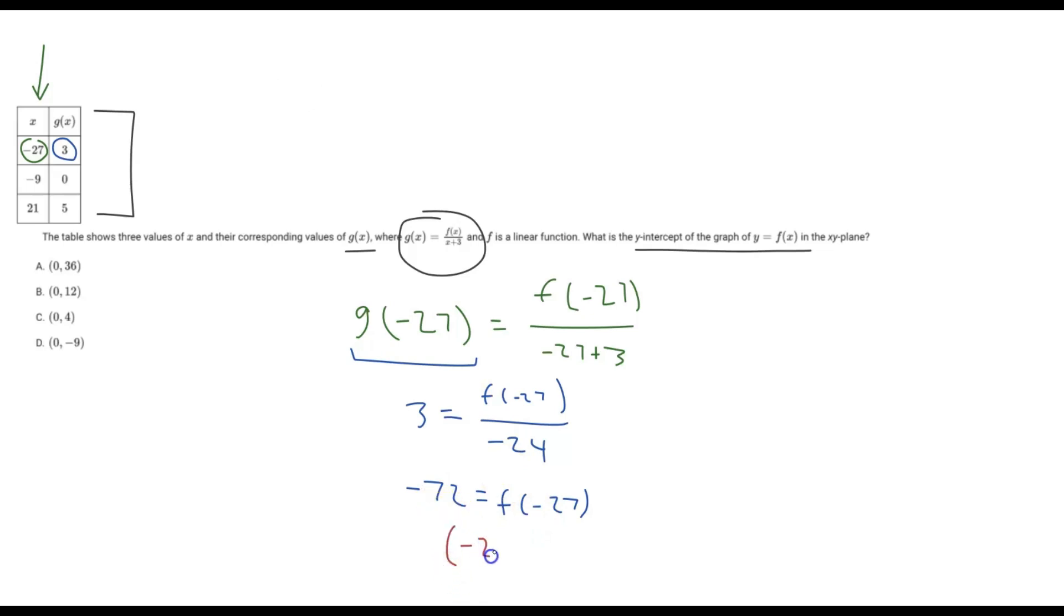That is just the coordinate point of x, y, negative 27 comma negative 72. And we know for slope, if we're trying to find the y-intercept, as long as we have two points here, we can determine that because it's a linear function. So if you find two coordinate points, we can then create the equation for it and then therefore determine the y-intercept.